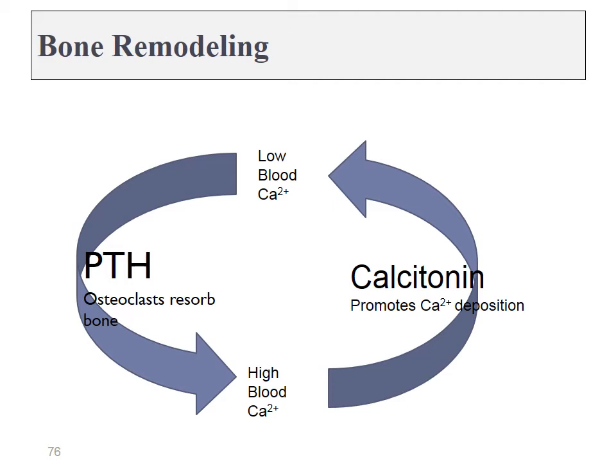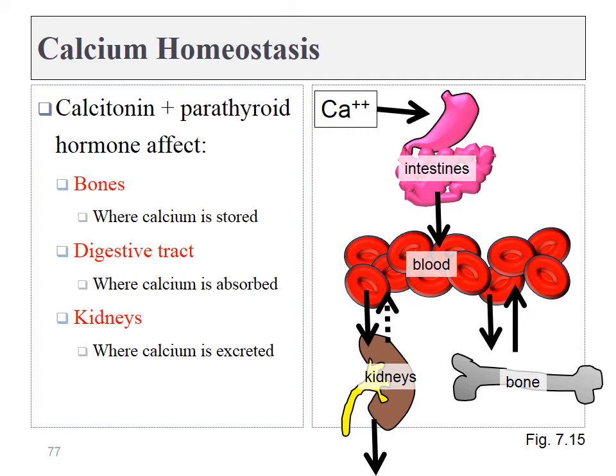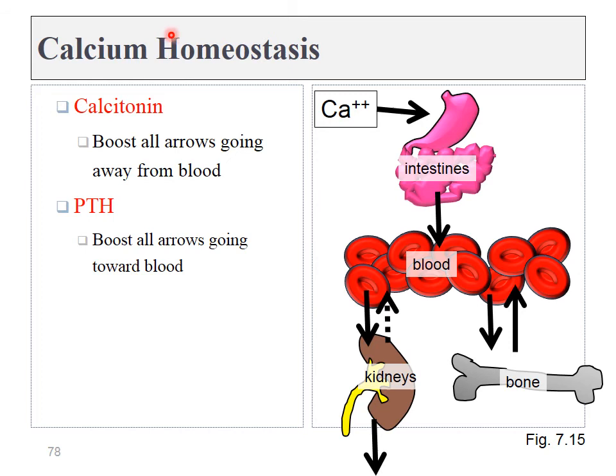PTH is released when blood calcium levels drop; calcitonin is released when blood calcium levels go too high. Both of these hormones work at the same three target locations. Calcitonin is secreted when blood calcium levels are too high, and its job is to remove that calcium. It can do so by inhibiting calcium absorption from the gut, increasing calcium excretion from the kidneys, and activating osteoblasts, which take calcium from the bloodstream and turn it into the extracellular matrix of bone tissue, leading to an increase in bone density.